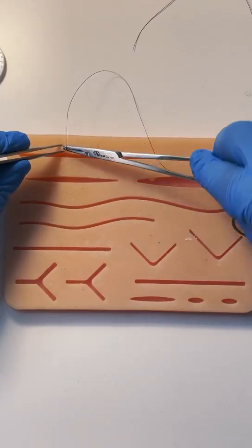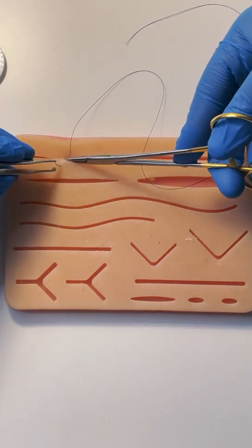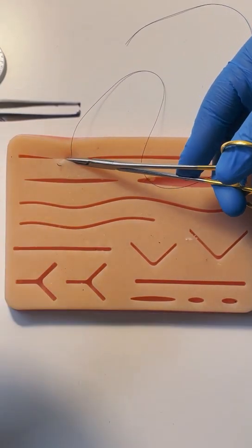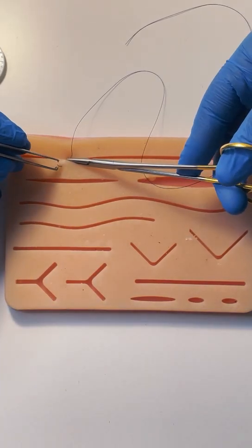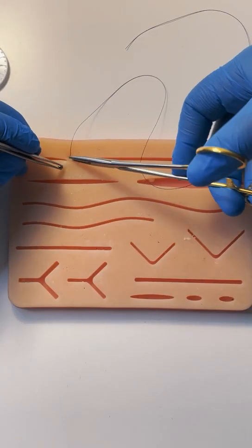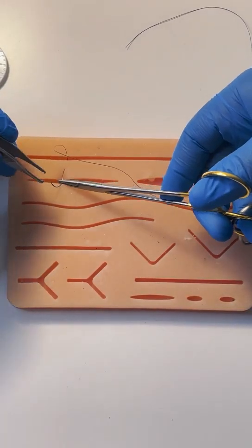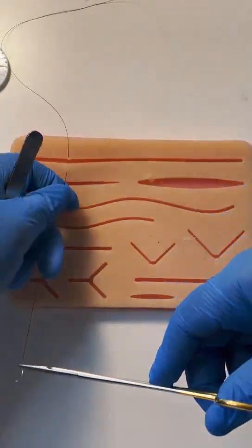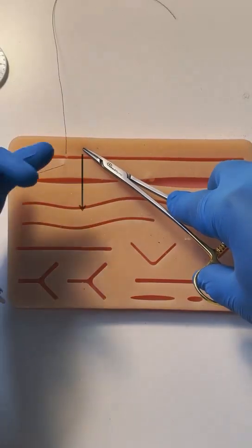You enter at 90 degrees, rotate your wrist, mount the needle between the teeth of the forceps, grab the body. Mount it straight away and palm your forceps right here. Don't put them down. You grab the suture and pull.